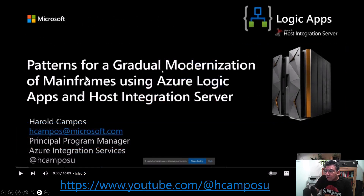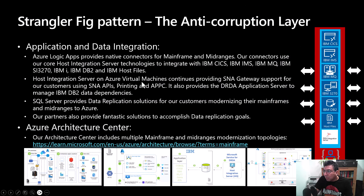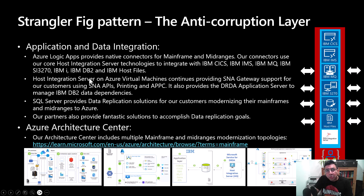In a previous video called 'Patterns for a Gradual Modernization of Mainframes using Azure Logic Apps and Host Integration Server,' I discussed the multiple approaches and patterns available. We discussed in depth the Strangler-Fig pattern and the anti-corruption layer, and how a combination of both with Logic Apps and Host Integration Server can provide a strong scheme of coexistence and a gradual migration for customers moving from the mainframe or integrating with the cloud.